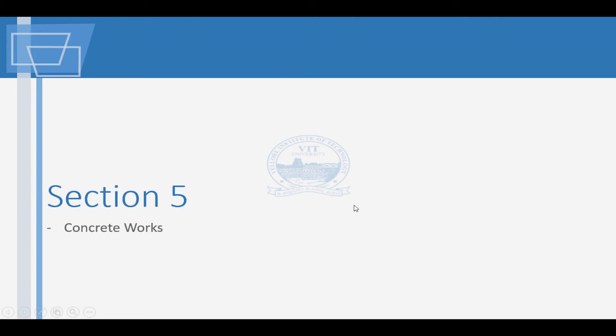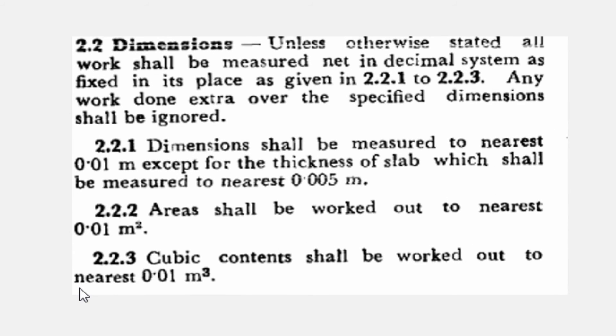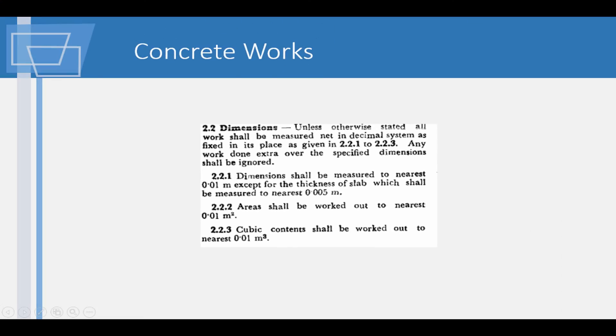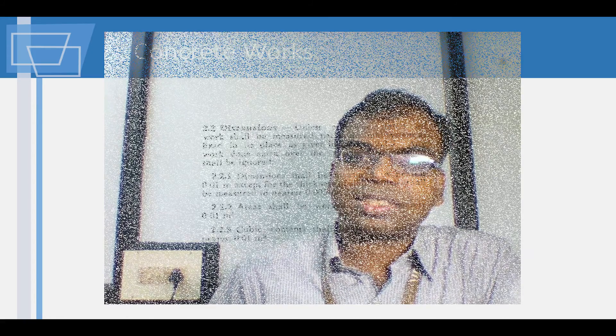Section 5 consists of common cases for the measurement of concrete works. Dimensions and measurements are as per Clause 2.2. By now, a pattern would be observed in terms of the fineness of measurement. This observation is worth making note of and keeping in mind for the subsequent sections.